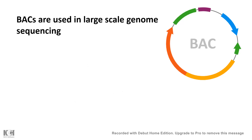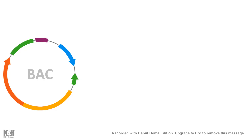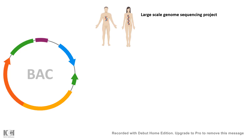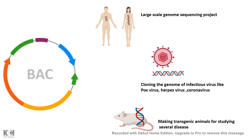BACs are always used for large-scale genome sequencing — for example, BACs were used in the human genome sequencing project. They can also be used to clone the whole genome of a virus, like poxvirus, herpesvirus, and coronavirus, creating infectious clones for research purposes. Additionally, a disease-related gene that is large can be cloned and used to make a transgenic animal like a transgenic mouse, making BAC a useful vector in that respect.